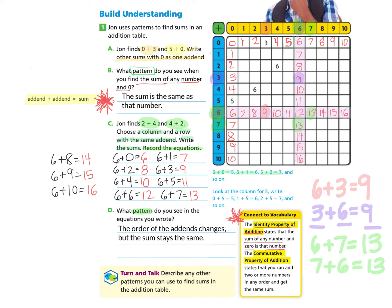Then we also found the commutative property of addition, which states that you can add 2 or more numbers in any order, and you will get the same sum. And we have a lot of examples, but over here we were showing some examples with the addends 6 and 3 and 6 and 7.